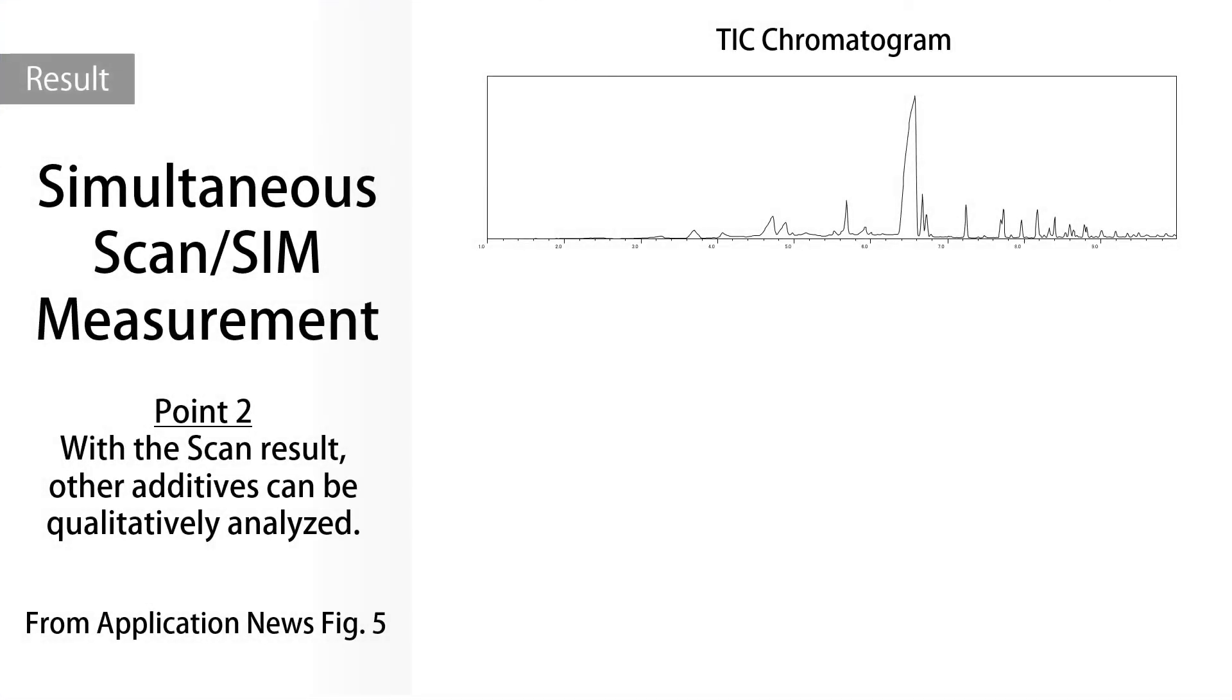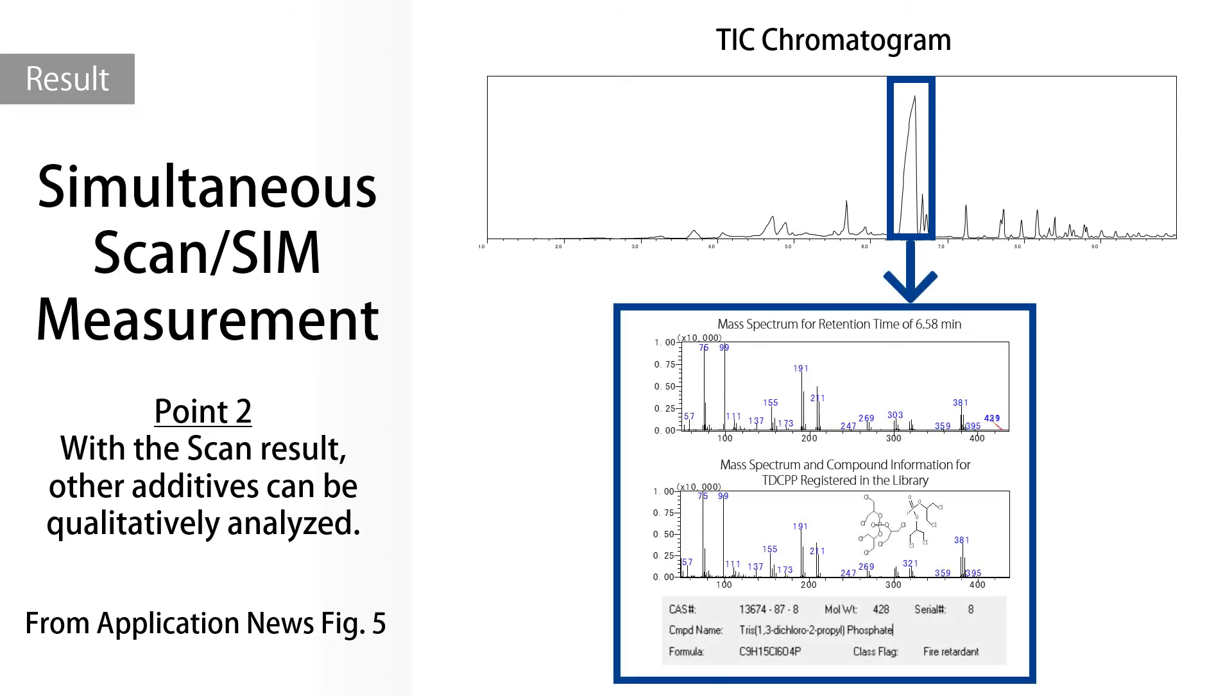For example, in this result, various additives other than PIP-3-1 are found. Through qualitative analysis in our company's mass-spectrum library for additives, it was found to be tris phosphate 1,3-dichloro-2-propyl, a type of phosphorus flame retardant. In this way, simultaneous scan-SIM measurement enables qualitative analysis of additives other than PIP.